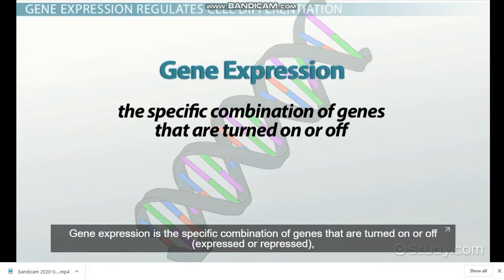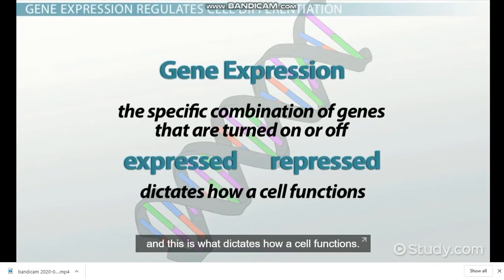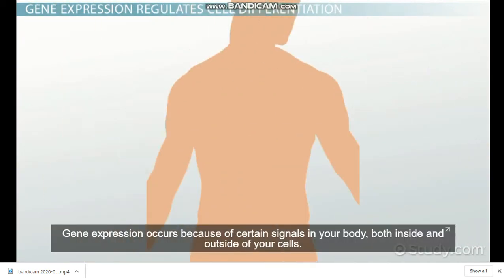Gene expression is the specific combination of genes that are turned on or off — expressed or repressed — and this is what dictates how a cell functions. Gene expression occurs because of certain signals in your body, both inside and outside of your cells.